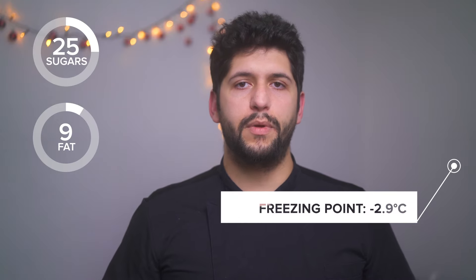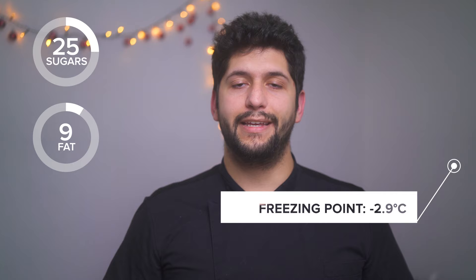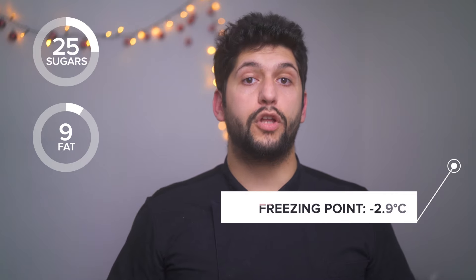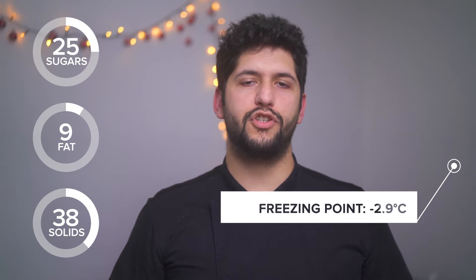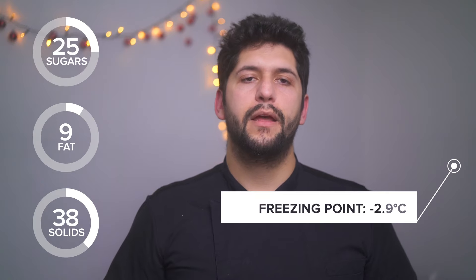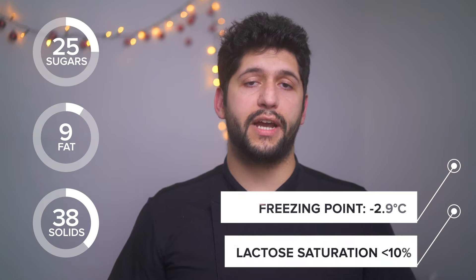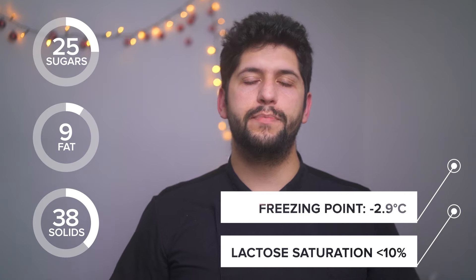In the Gelato Expert Academy full course we discuss all the ranges of these parameters, but here I can give you some average percentages. For total sugars, an average content of 24–25%. For fats, 9% is a fair average in modern gelato. For the freezing point we aim around minus 2.9 degrees Celsius. For total solids we want at least 38% to have a gelato that is creamy enough. And we will check that the lactose saturation is below 10%.